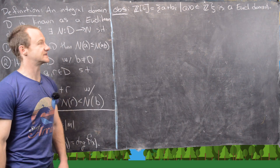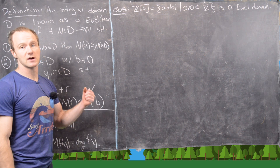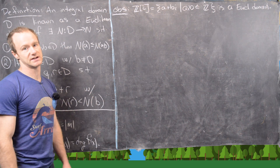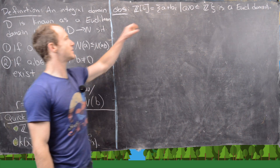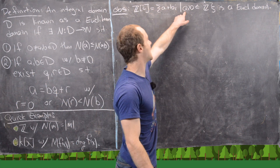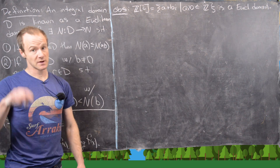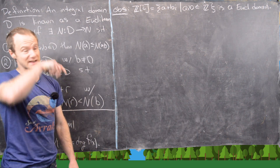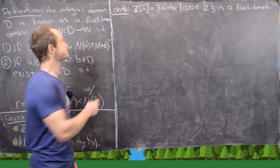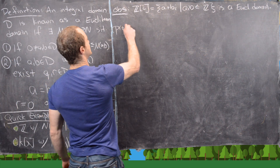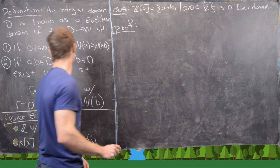We've seen a bunch of things pointing to similarities between ℤ and K[x], and underlying all of those is that they're Euclidean domains. We want to look at another example: the Gaussian integers. Those are all complex numbers of the form a + bi, where a and b are integers. We're going to show that this is a Euclidean domain.